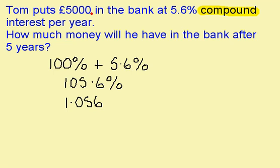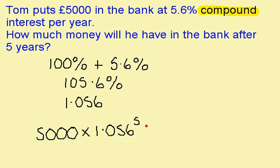We put £5,000 into the bank, times this by our multiplier, and because the money is left in the bank for 5 years, the multiplier is to the power of 5. Typing this into the calculator and rounding to the nearest penny gives us £6,565.83.